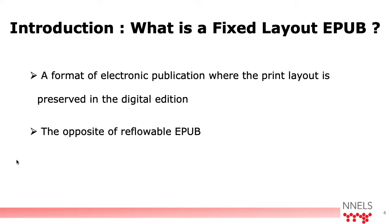What is a Fixed Layout EPUB? It is mainly a format of digital publication where the print layout is preserved in the digital edition. It is the opposite of reflowable EPUB. Fixed Layout is comparable to a PDF format where the layout stays consistently the same. On the other hand, reflowable EPUB is like a regular web page where you can change font type, size, and color, and zoom in and out while the content automatically adjusts to the window.